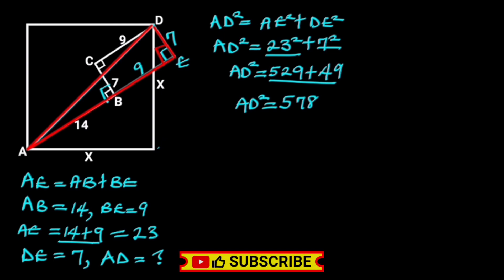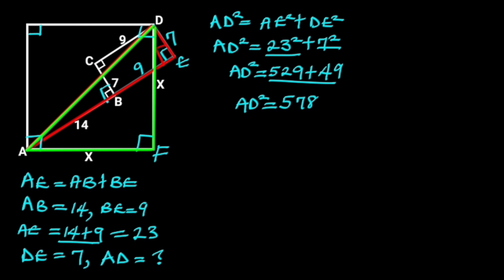Before we proceed, if you're new to my channel, hit the subscribe button so you make sure to never miss my videos. Next, let's call this point F. Since this shape is a square, then each angle in every corner is a right angle. Now, if we consider triangle ADF, notice that triangle ADF is also a right triangle.